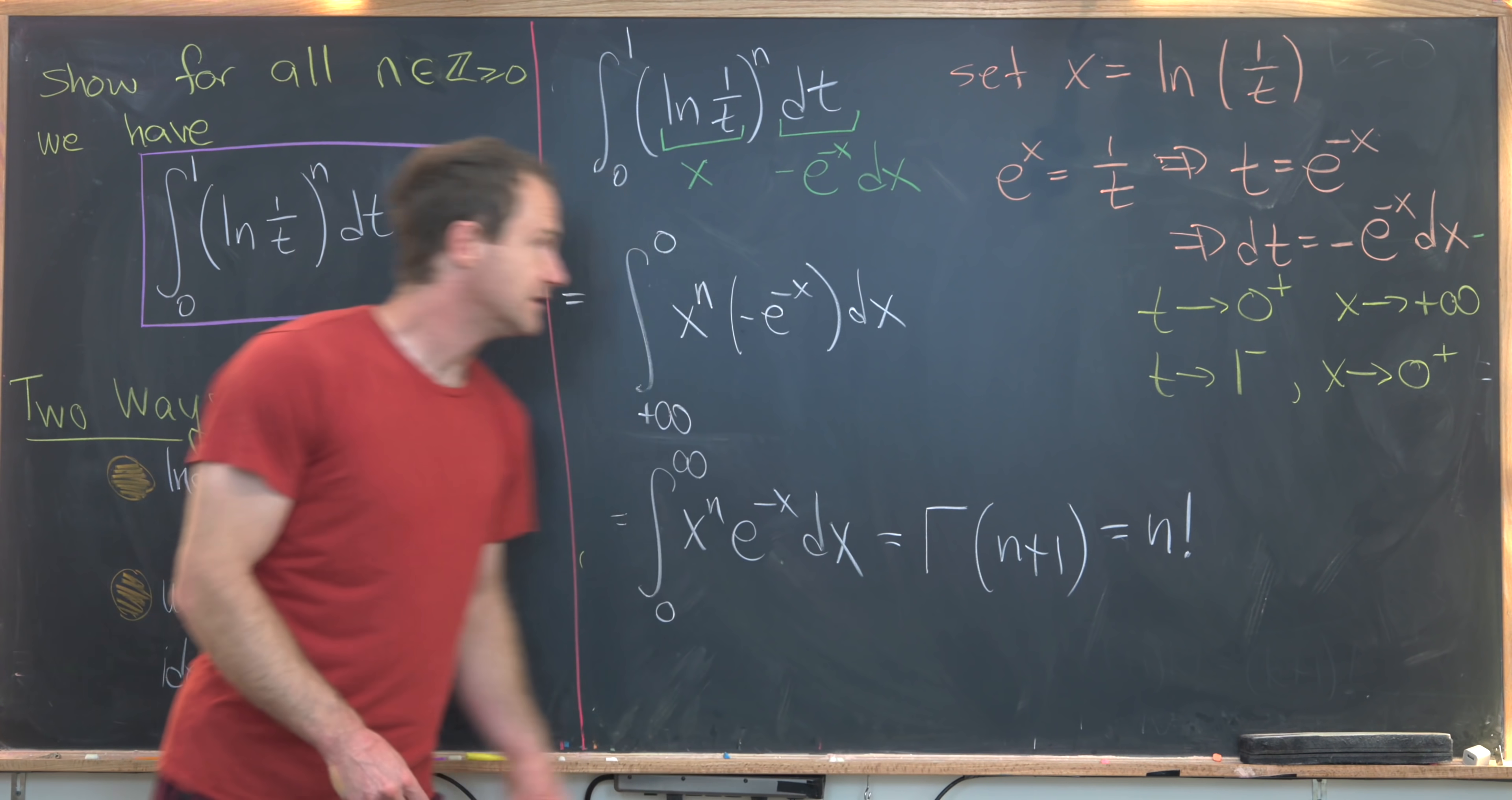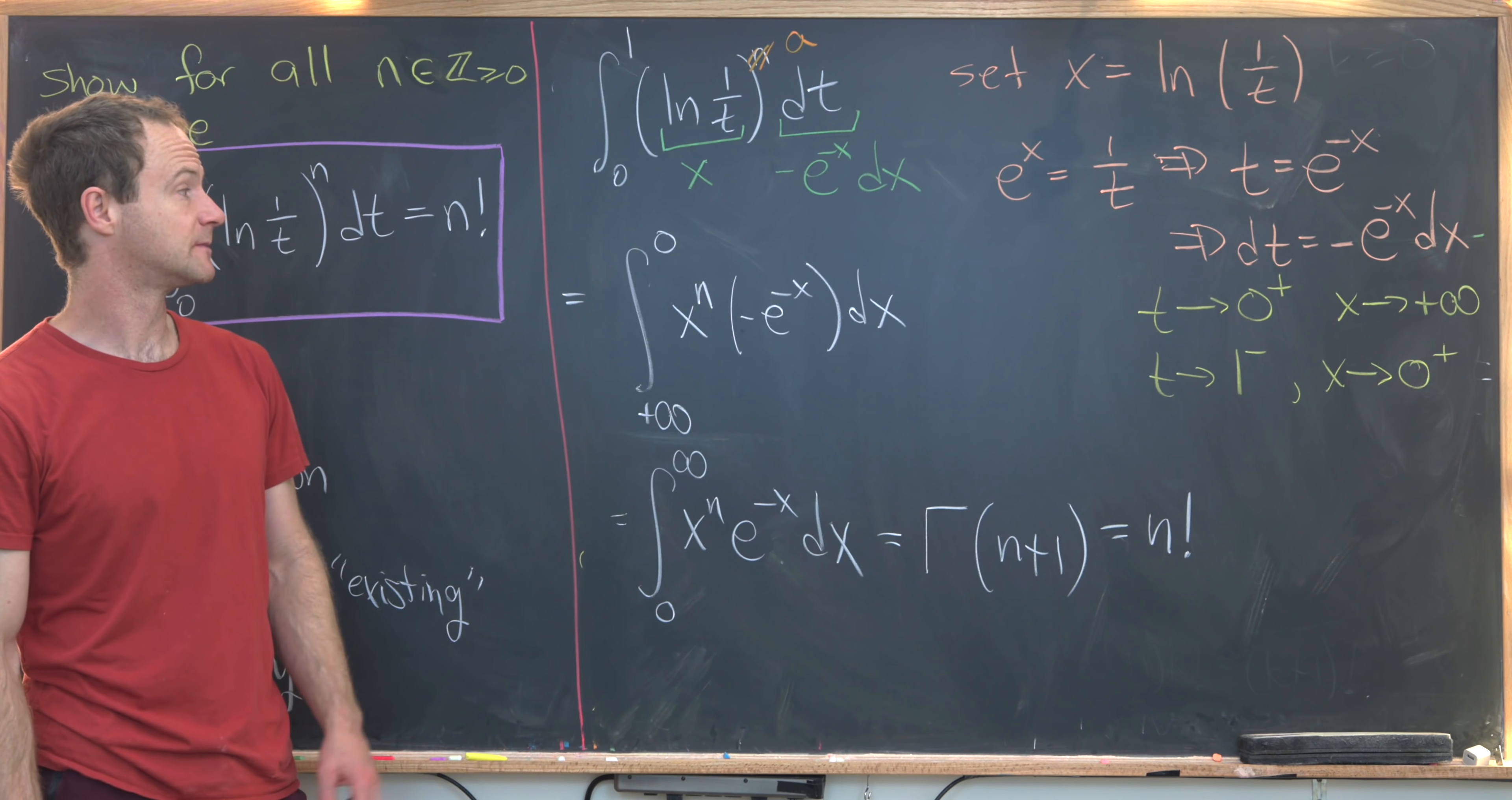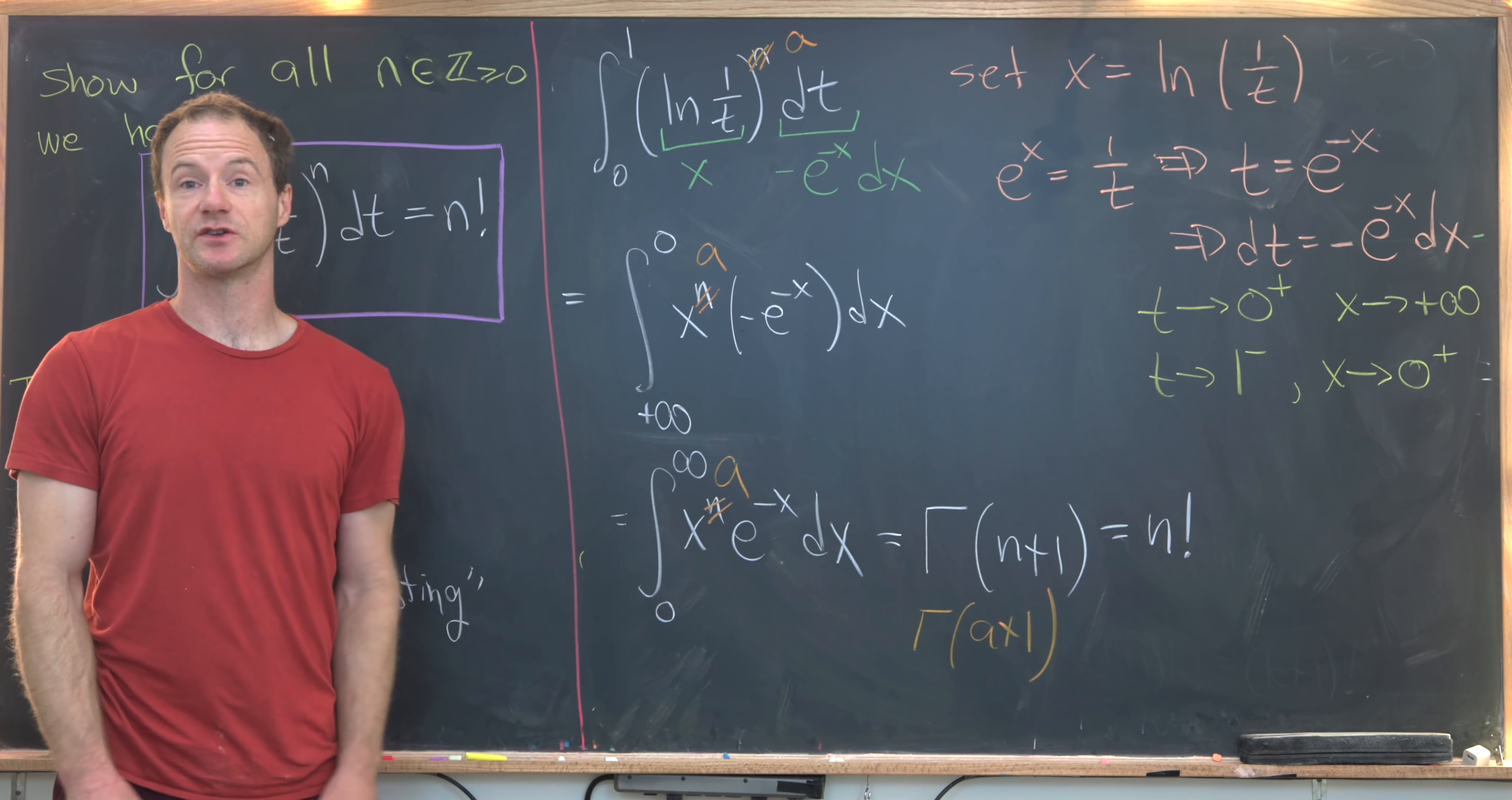Maybe before we leave, I'd like to point out that there's nothing special about the number n here. It no longer has to be a non-negative integer. We could take it to be a, where a is more generally a real or complex number, having some certain conditions, like I believe it's not allowed to be a negative integer. But now this a will just run all the way down here, and we'll get that this is the gamma function evaluated at a plus 1, where a no longer has to be a non-negative integer. So we finished off proving this identity in our two ways, and that's a good place to stop.